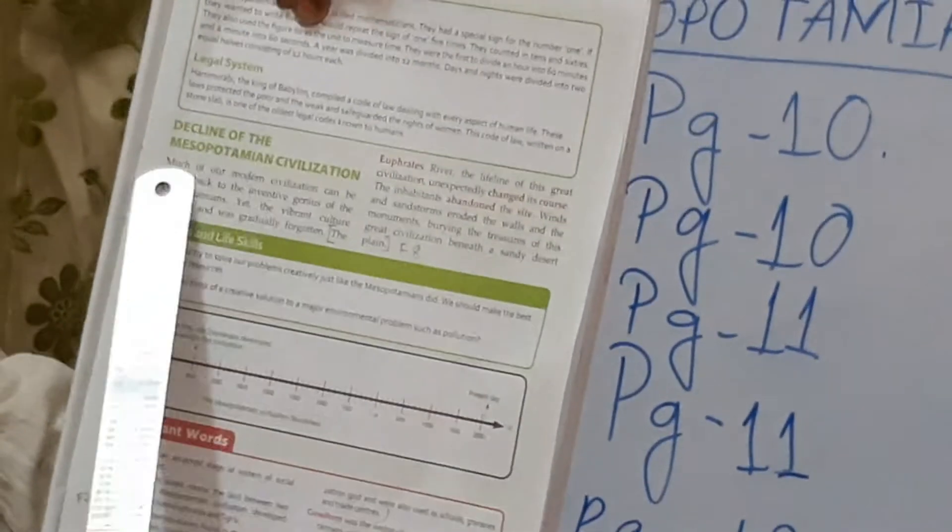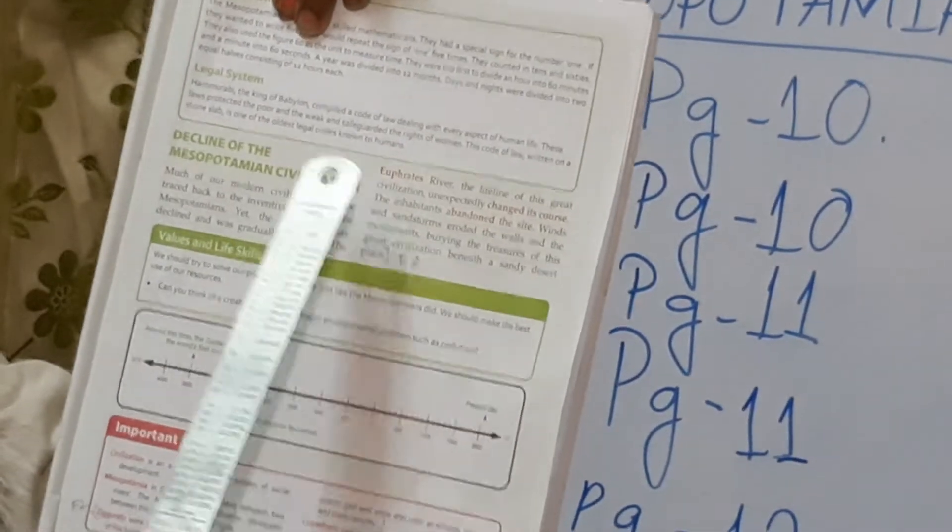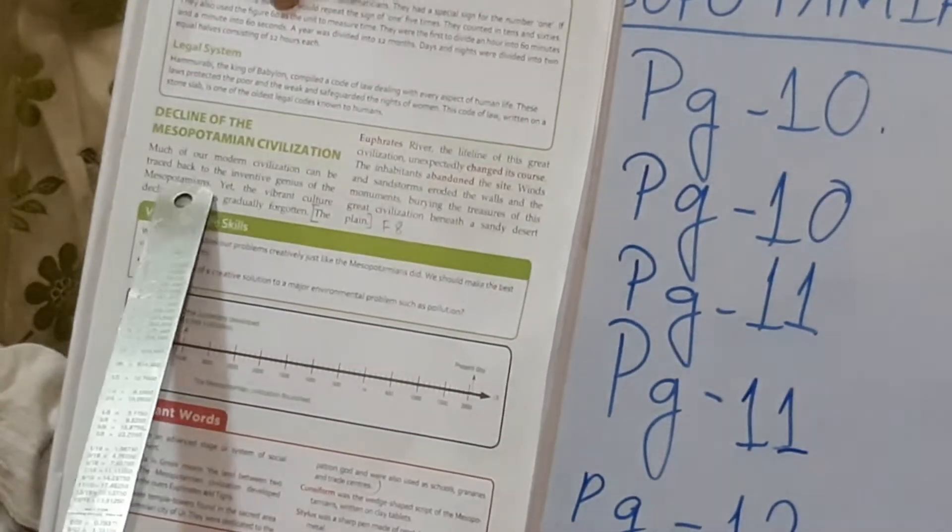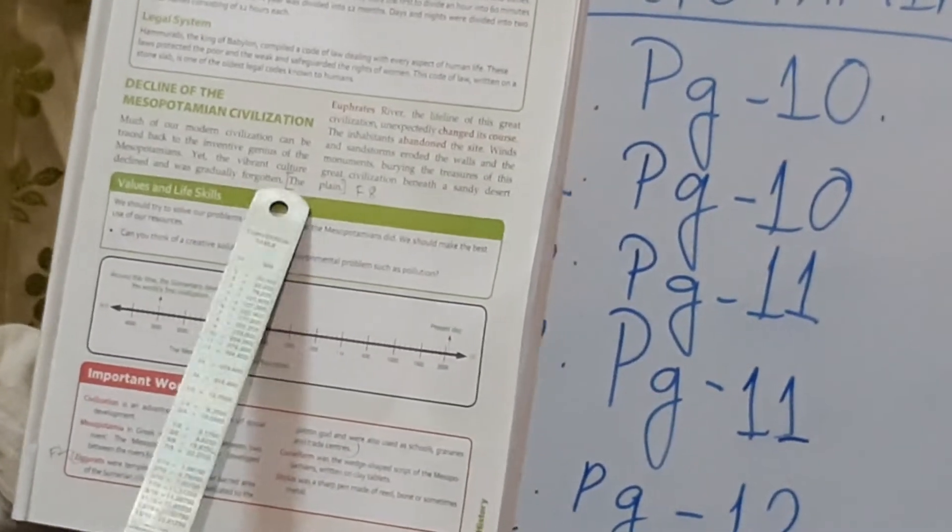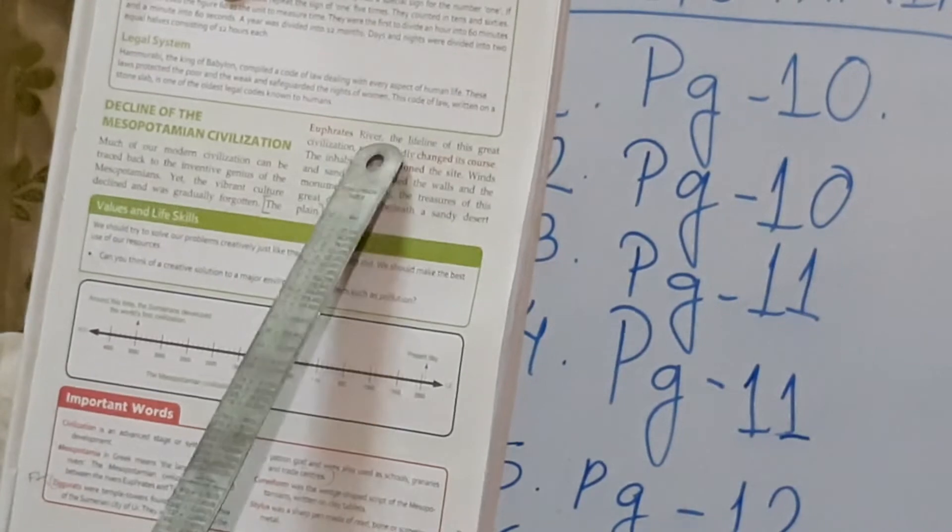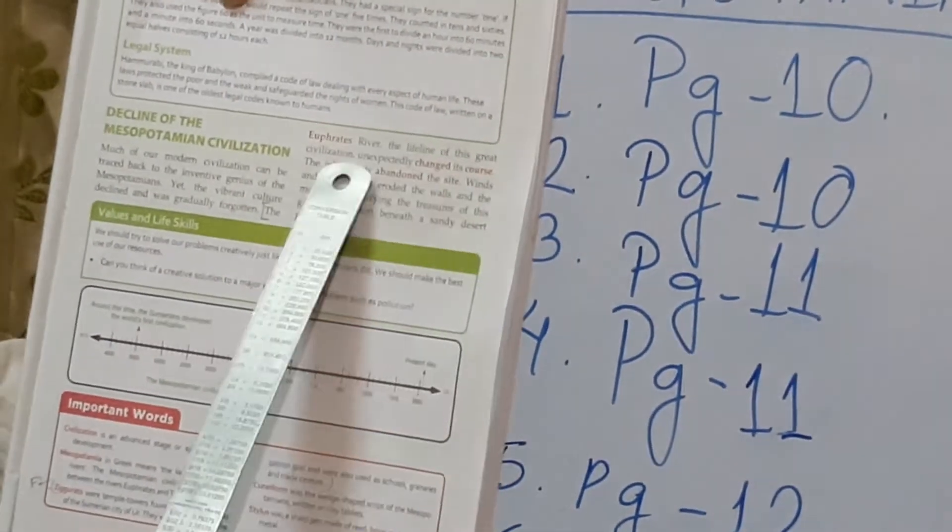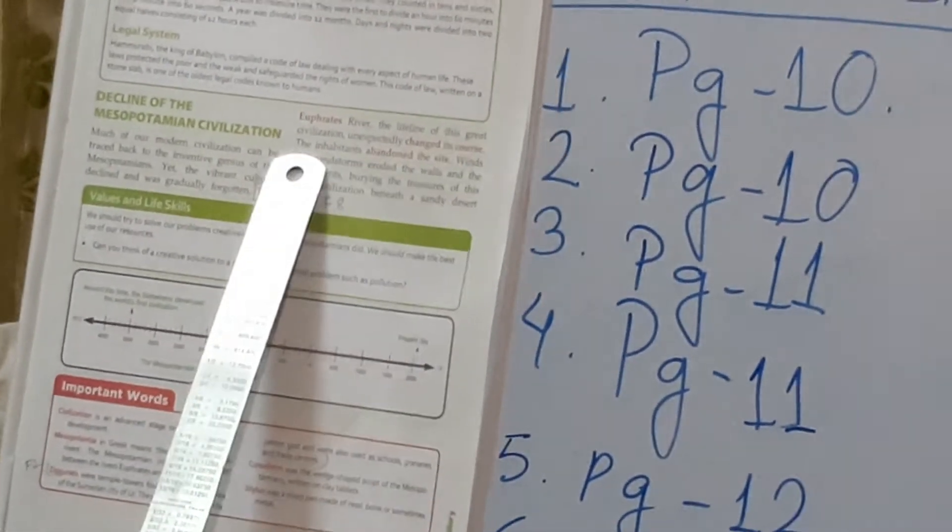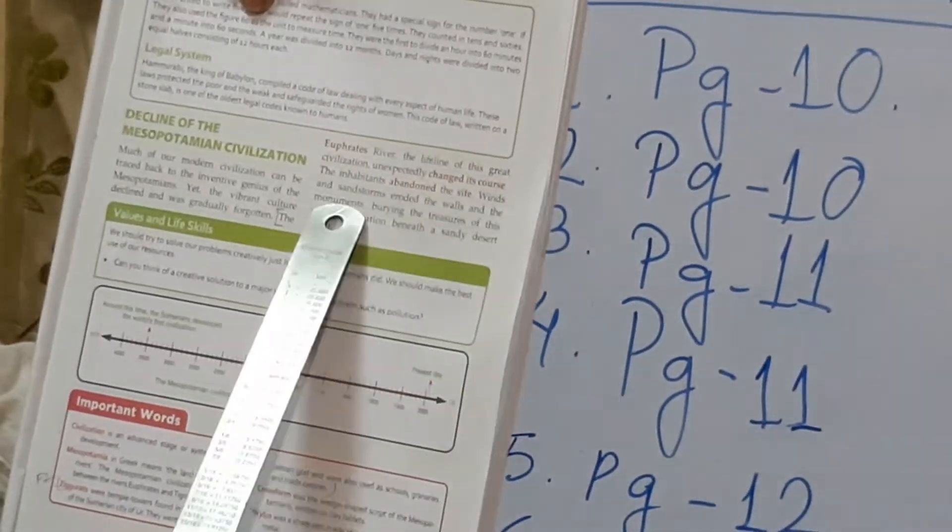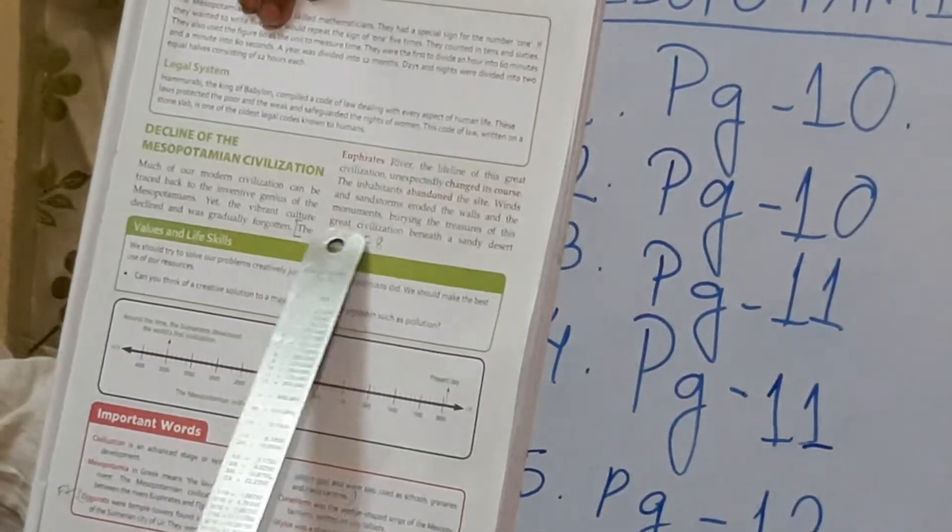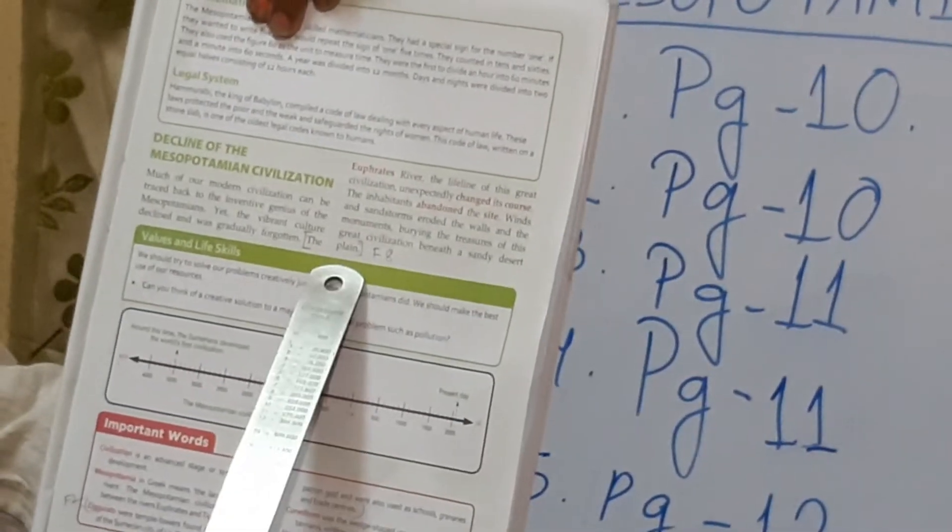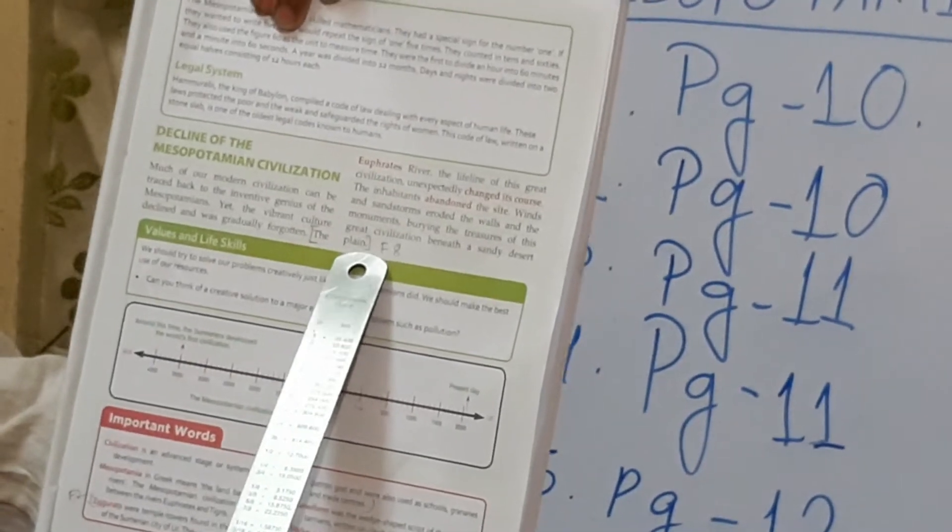Here also you have to mention briefly about the decline of Mesopotamian civilization. Open page number 13 again. You have to start. See the heading decline of Mesopotamian civilization is given here. From here you see after the second line, third line, third sentence which is starting. The Euphrates riverbed, the lifeline of this great civilization unexpectedly changed its course. The inhabitants abandoned the site. Winds and sandstorms eroded the walls and the monuments burying the treasures of the great civilization beneath the sandy desert plain. Up to plain, you will write this answer.